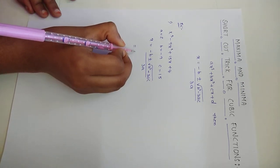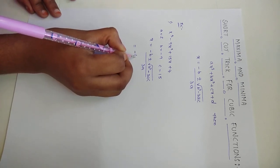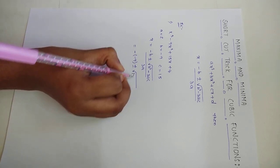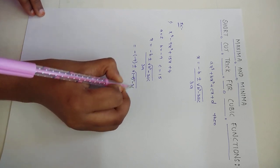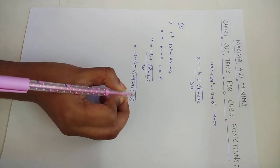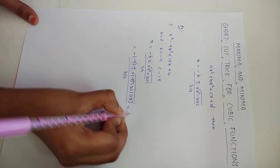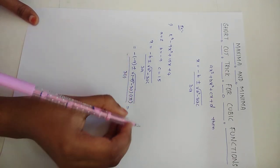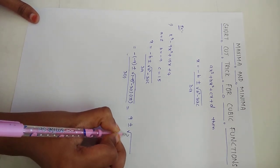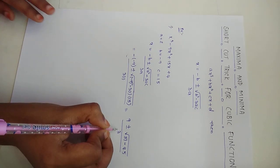Here b = −9, so −(−9) gives us +9, plus or minus under root of b² = (−9)² = 81, minus 3 × a × c = 3 × 1 × 15 = 45, all divided by 3a = 3 × 1 = 3.